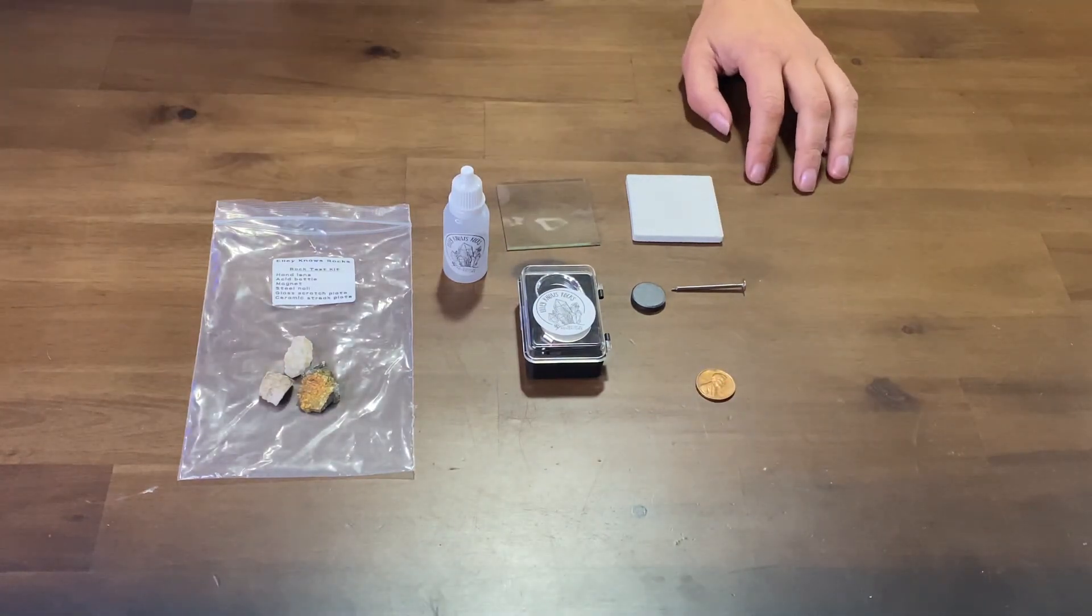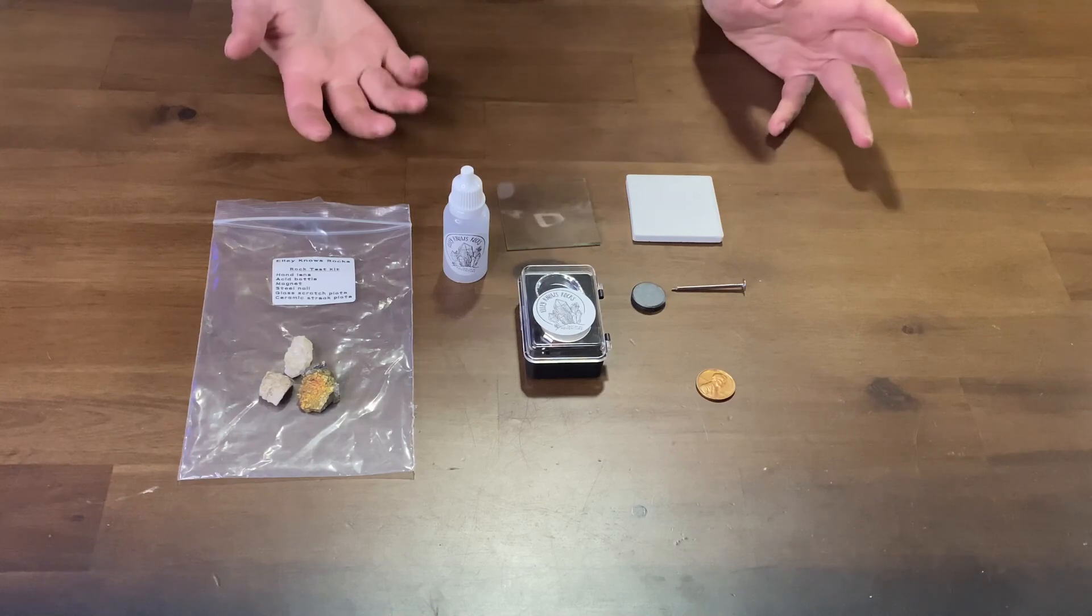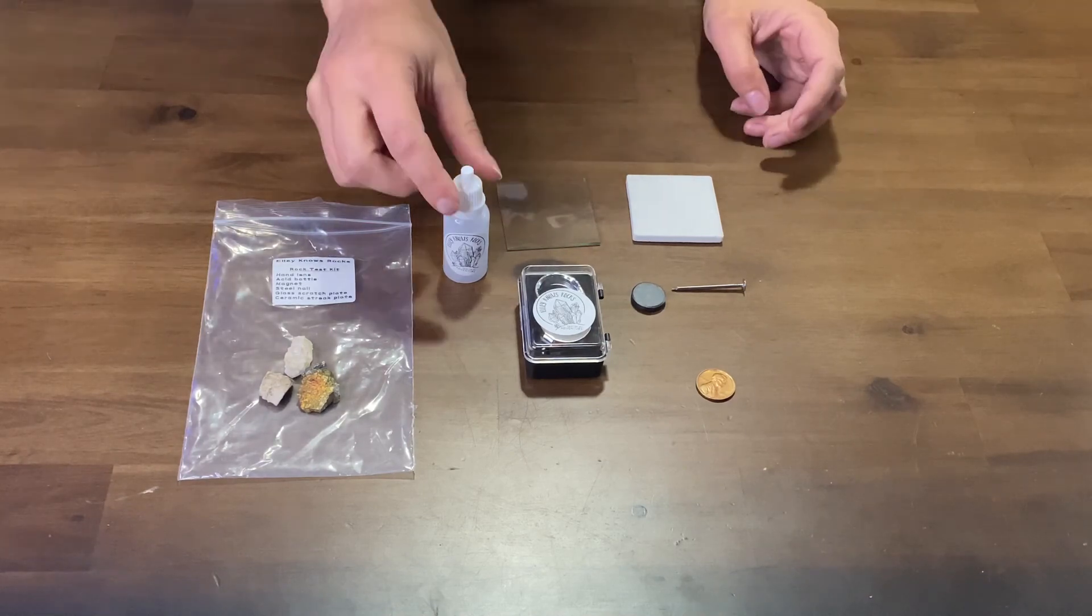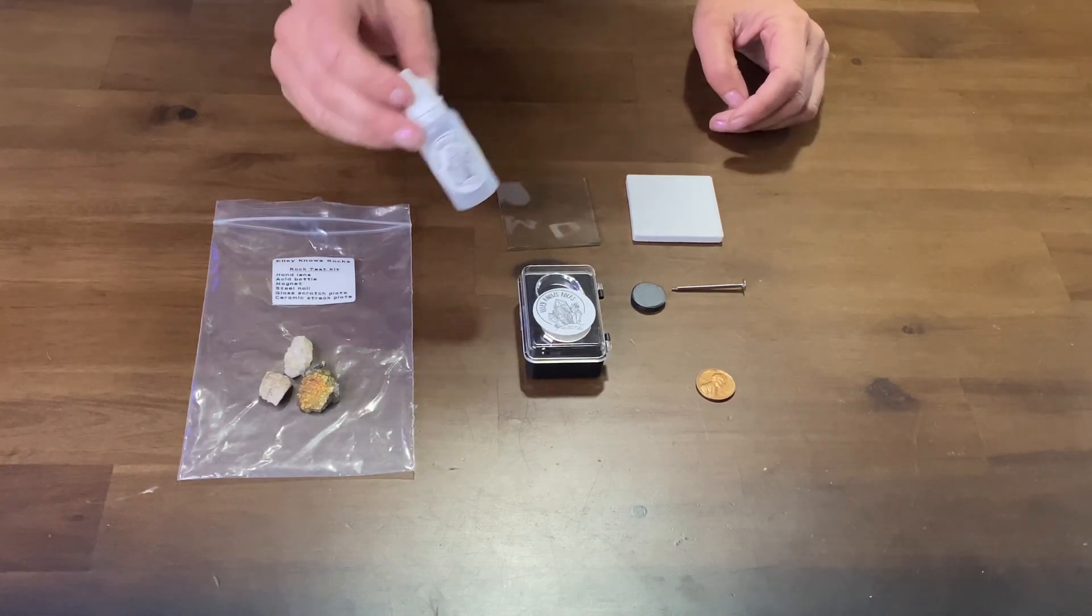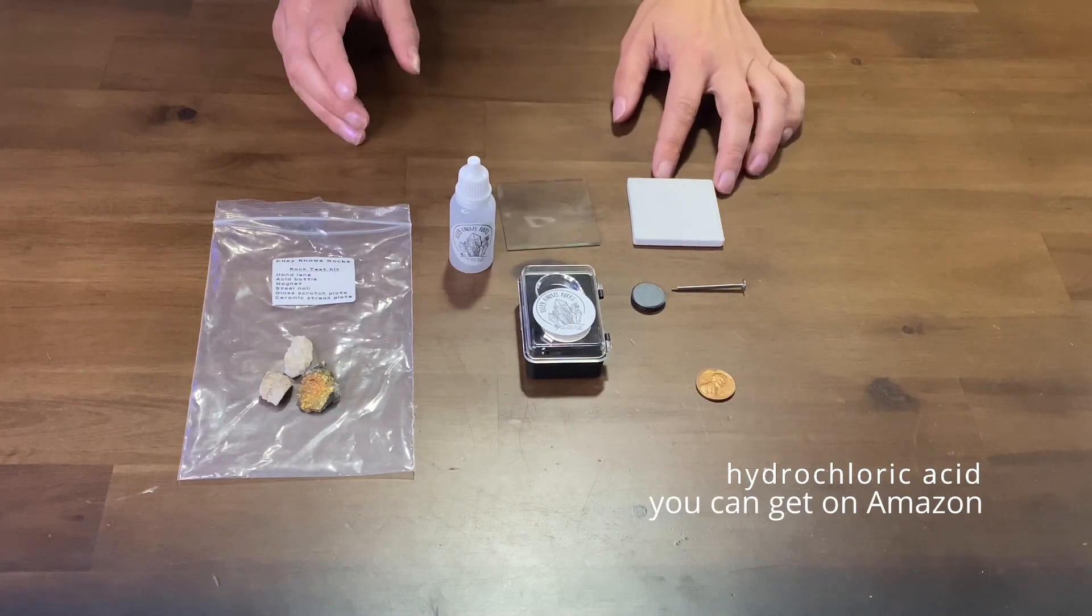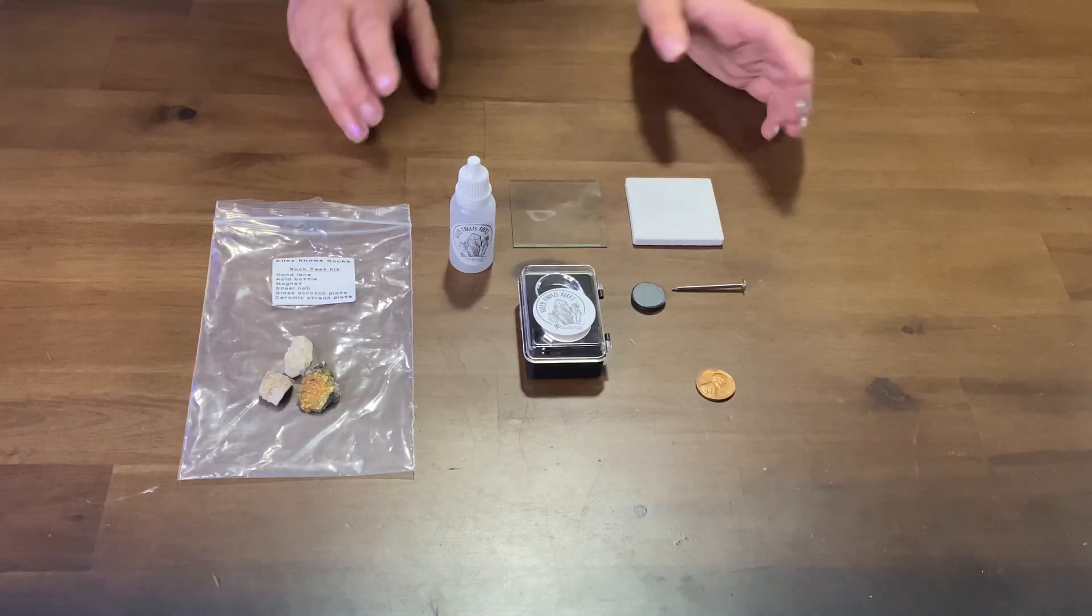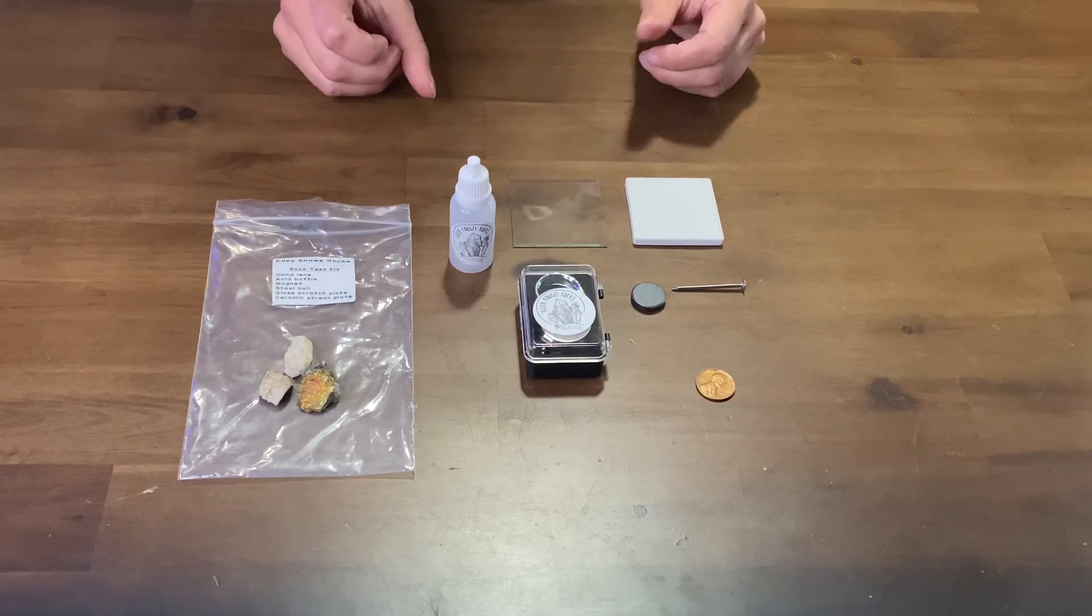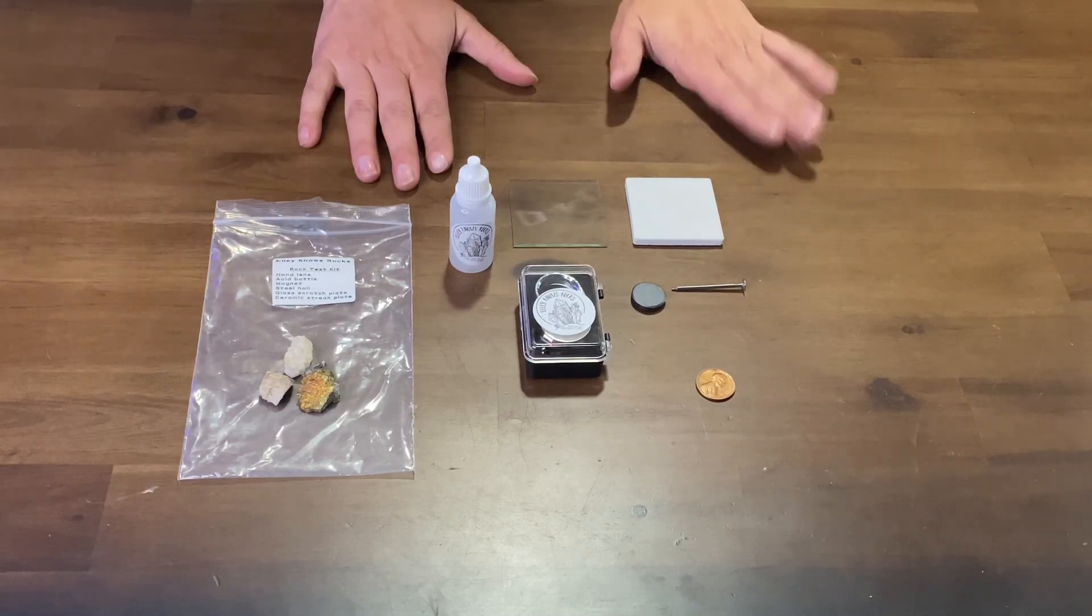For some people, you'll probably have white vinegar around your house and that's going to be good for your acid bottle. For me, I love to use hydrochloric acid, also known as HCL, just because it gives a quicker effervescence for calcareous minerals.